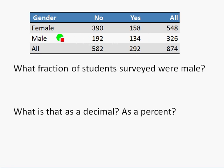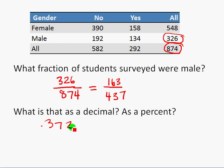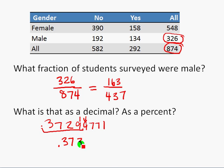What fraction of those students were male? We look at the male row: 326 out of the total 874 students. So the fraction of surveyed students who were male is 326 out of 874, or in lowest terms 163 over 437. As a decimal, dividing 326 by 874 gives .37299771, but rounding to 4 decimal places — since the next digit is 9 — we round up to .3730, or 37.30%.